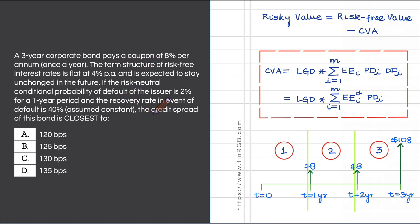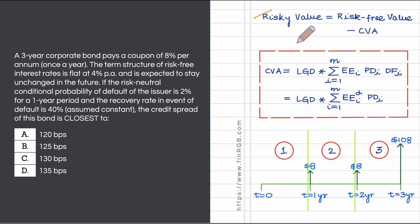The task at hand is to compute the credit spread of this corporate bond. Let us start by computing the risky value — that is, the value assuming the bond can indeed default — and also the risk-free value, assuming the issuer will not default. Recall that the risky value of this corporate bond can be written as its risk-free value minus CVA, the credit valuation adjustment.